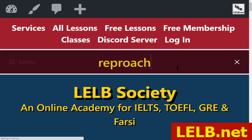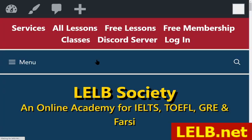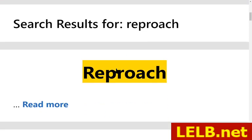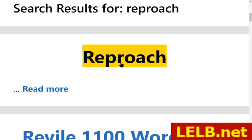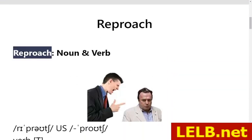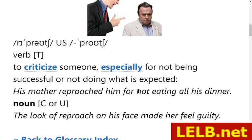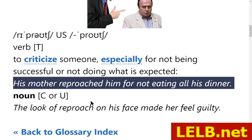The next word is reproach. Reproach means to criticize somebody, especially for not being successful or not doing what is expected of them. For example: his mother reproached him for not eating all his dinner.